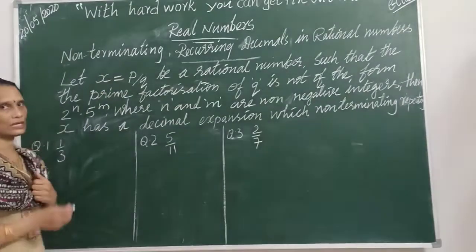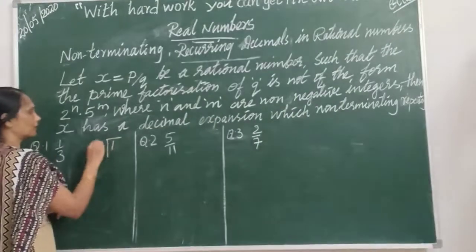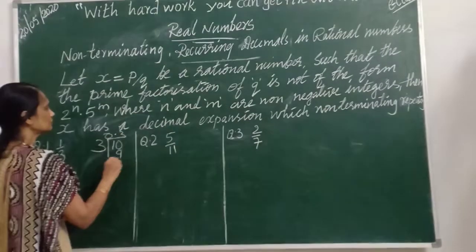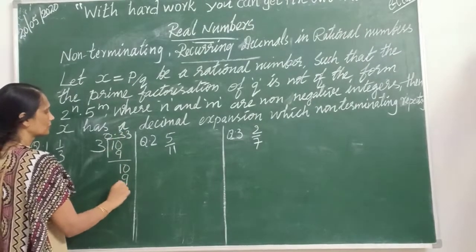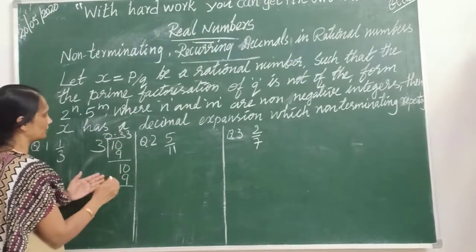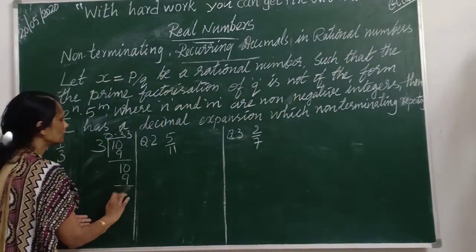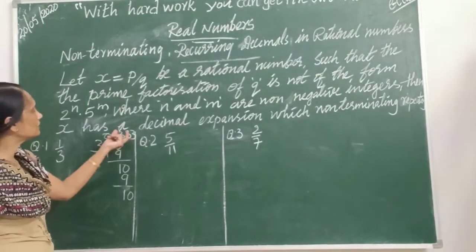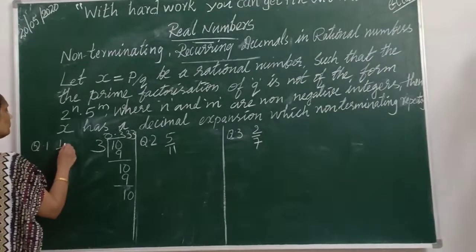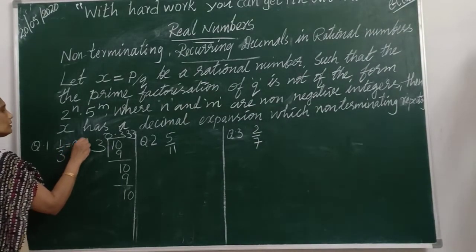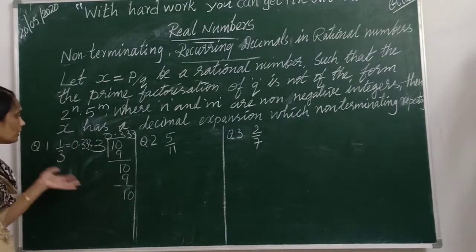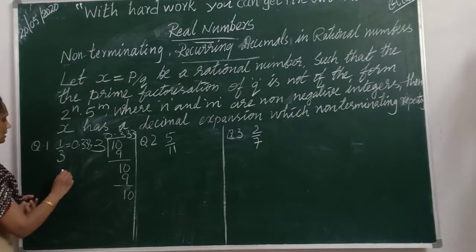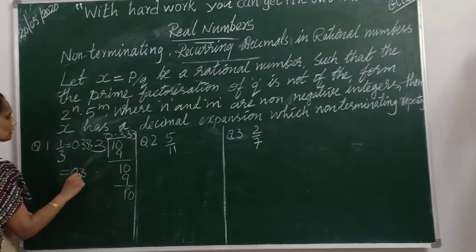Here 1 by 3 — let us divide 1 by 3. We have to start with the decimal point. What do you observe here? The digit 3 is repeating any number of times. So only this particular digit 3 is repeating. We can write 1 by 3 as 0.333... meaning we don't know how many 3s will come. Since this 3 is repeating, we can also show it as 0.3 bar.